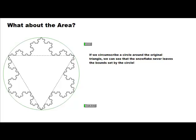Well, it turns out that if we do some math, we come up with the area equal to 2 times the square root of 3 over 5 times S squared. I'll leave it up to you to confirm that mathematically, but even so, we've just proven that we can have an object that has an infinite perimeter but a finite area. Pretty cool, huh?